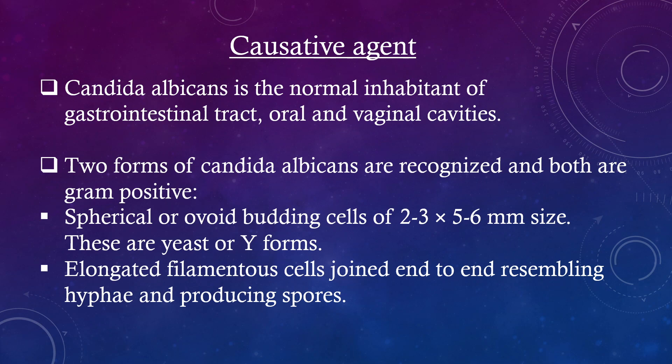Causative agent: Candida albicans is the normal inhabitant of the gastrointestinal tract, oral and vaginal cavities. Two forms of Candida albicans are recognized and both are gram positive. Spherical or ovoid budding cells of 2–3 x 5–6 mm size — these are yeast or Y forms. Elongated filamentous cells joined end-to-end resembling hyphae and producing spores.